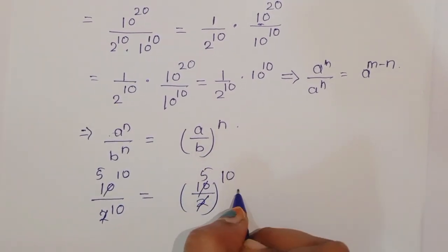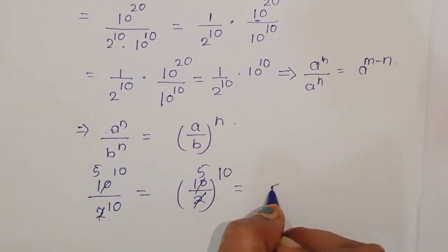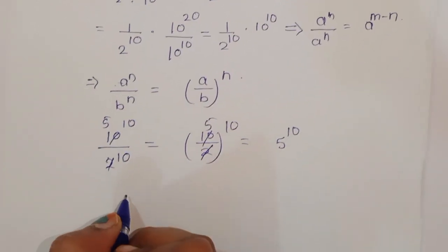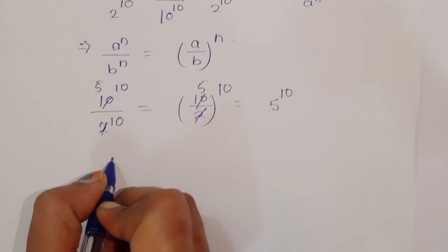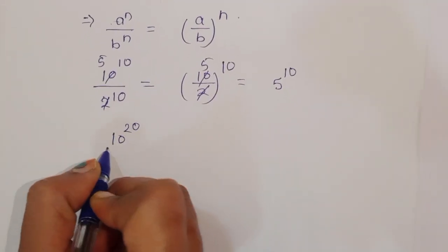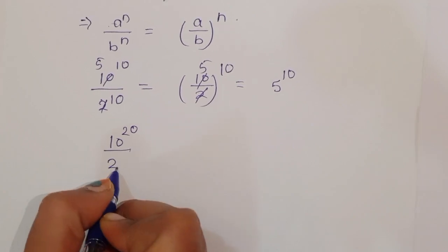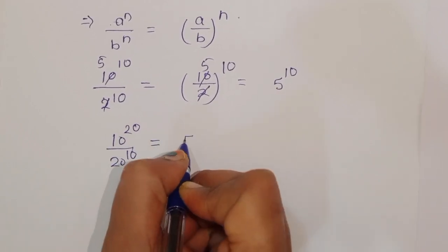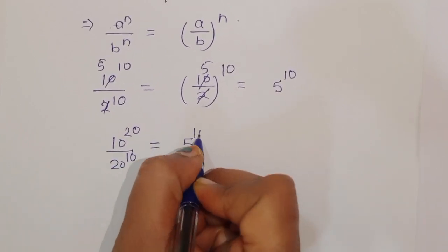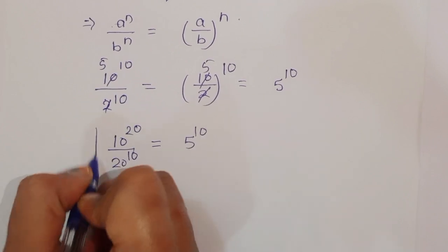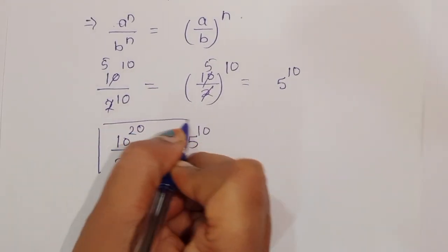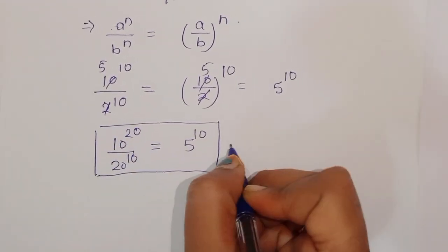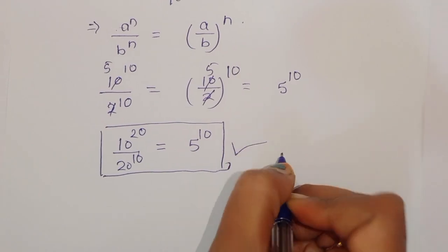Since 10 divided by 2 is equal to 5, we get 5 raised to 10. Therefore, 10 raised to 20 divided by 20 raised to 10 is equal to 5 raised to 10. This is the final solution. Thank you.